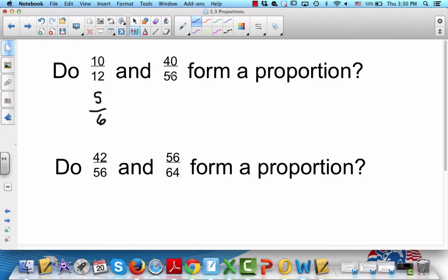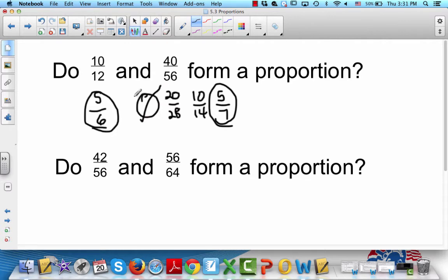40 and 56 - let's see. Both are divisible by 2, so that gives me 20 over 28. Both of those are divisible by 2, so that gives me 10 over 14. And both of those are divisible by 2, that gives me 5 over 7. So are 5 over 7 and 5 over 6 the same? No, they're not. So this is not a proportion.